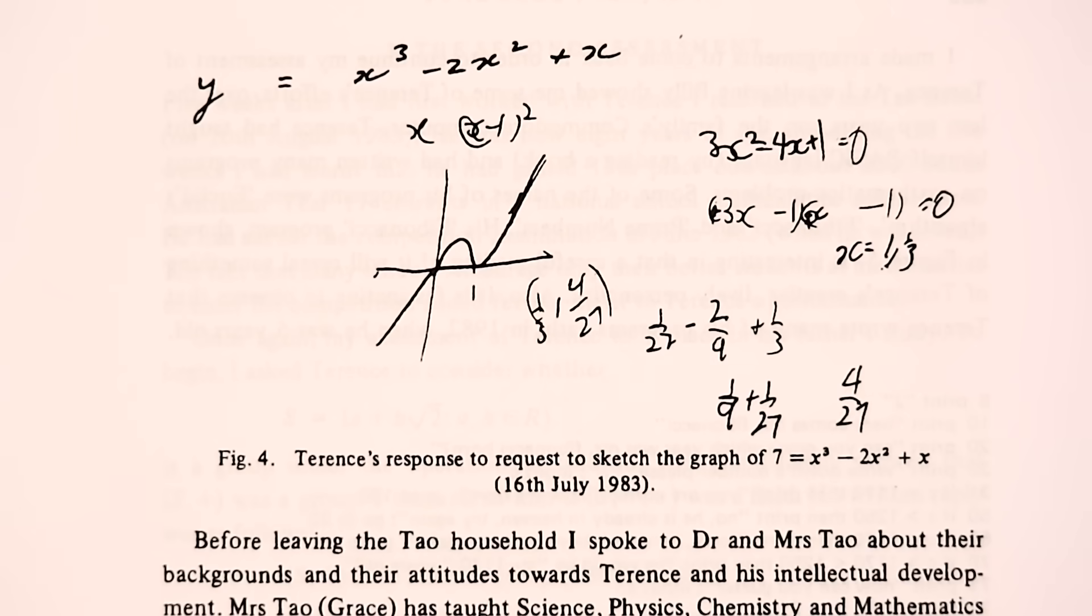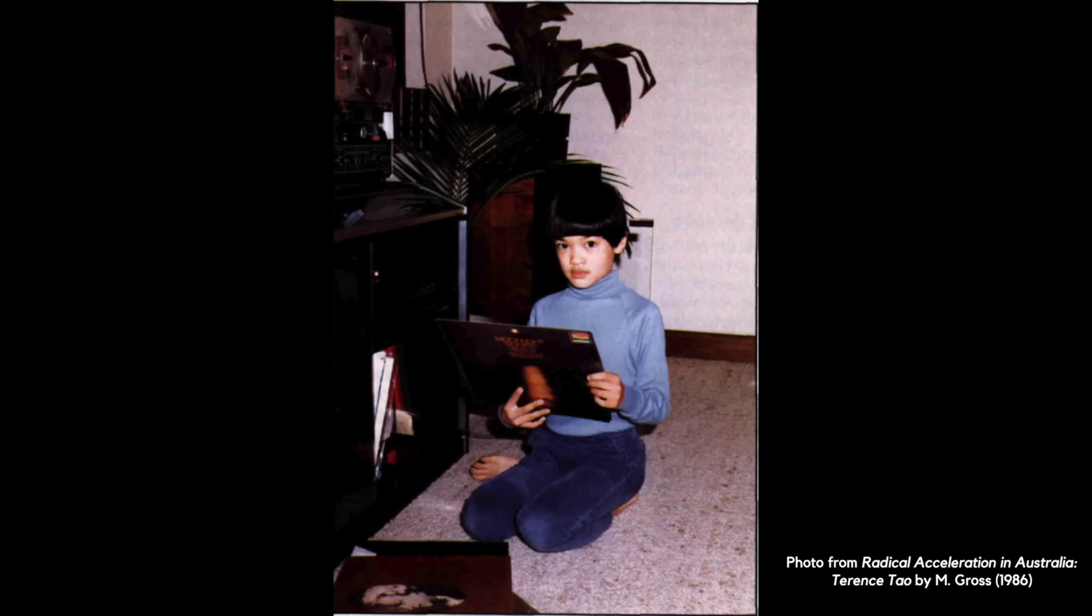It is interesting to note that Terence hadn't begun to study any calculus at school. But when Clements had arrived at the Tau household, and was speaking with Terence's parents, Billy and Grace, he had spotted Terence sitting in the far corner of the room, reading a book with the title calculus.